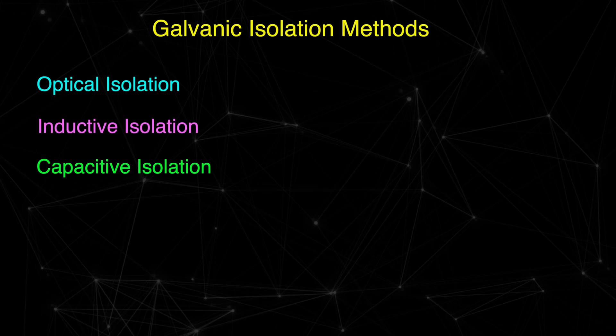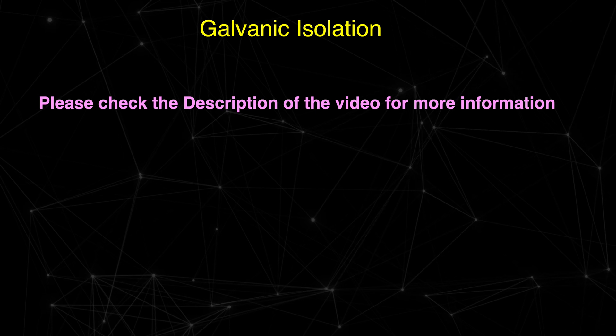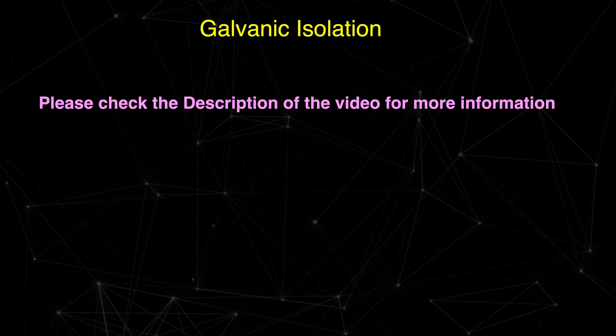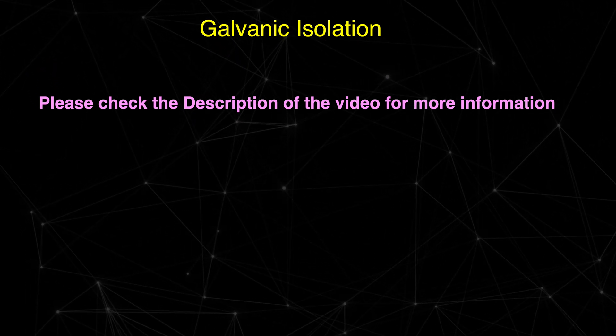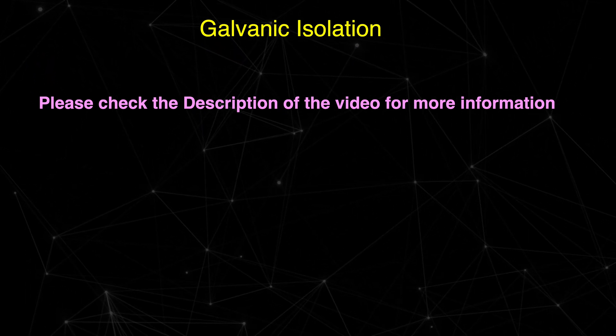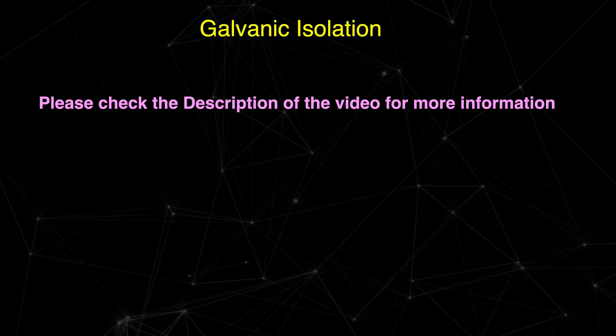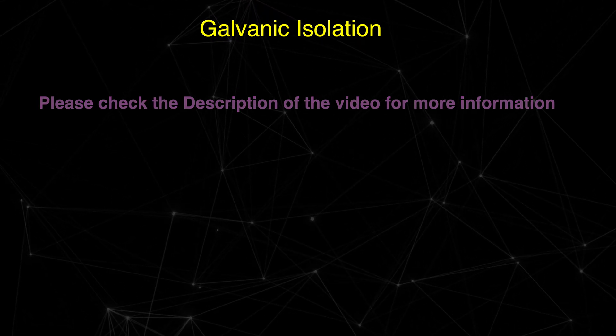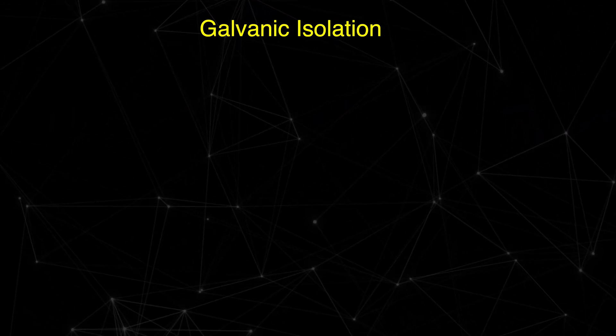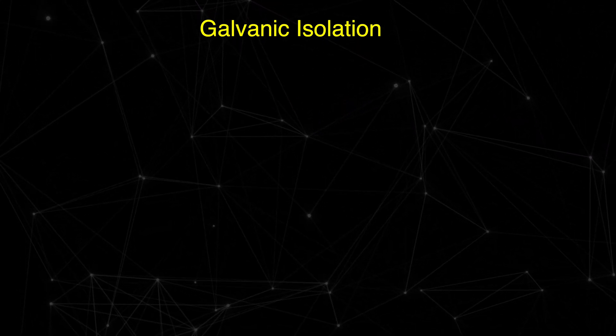As you can see, each technique has its advantages and limitations, but these three are the main techniques for galvanic isolation. For more information about galvanic isolation, please check the description of this video. I hope through this video you understood what is galvanic isolation and why it is required in electrical circuits.